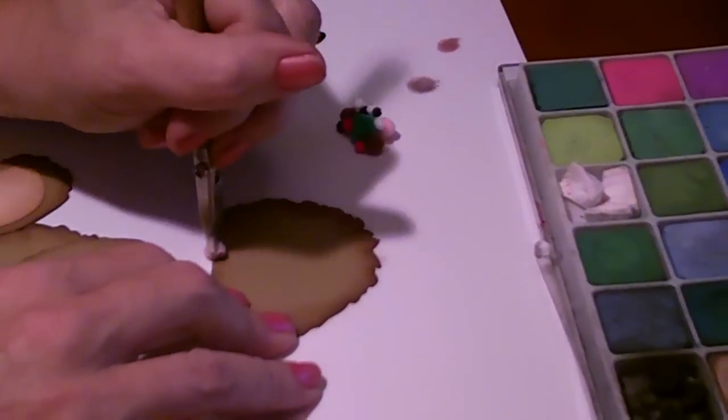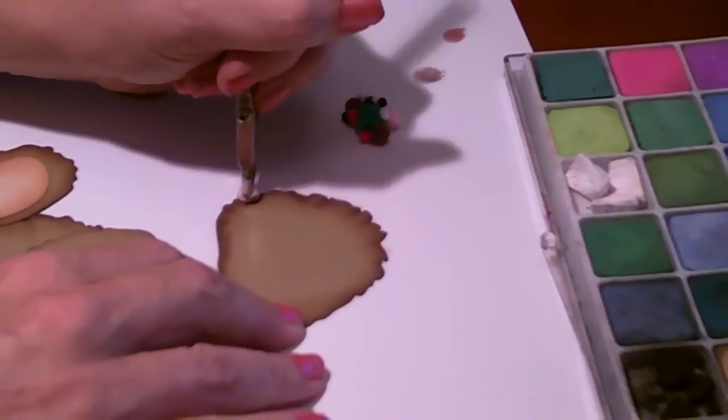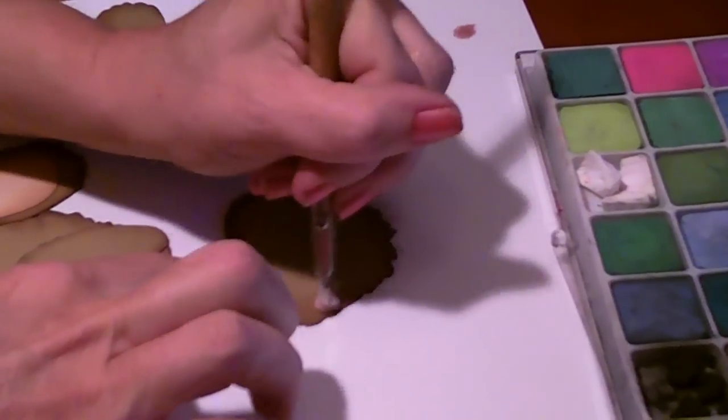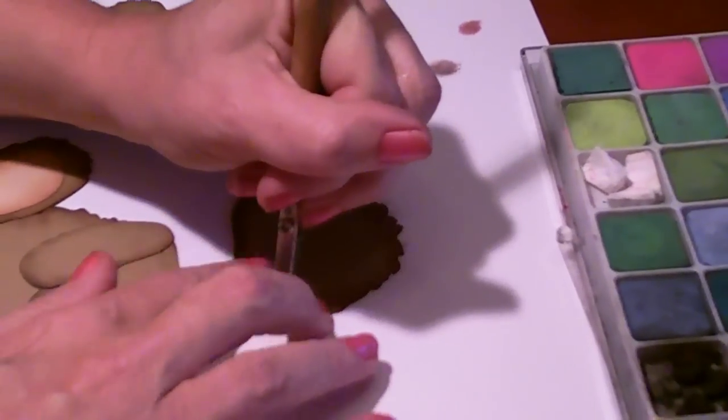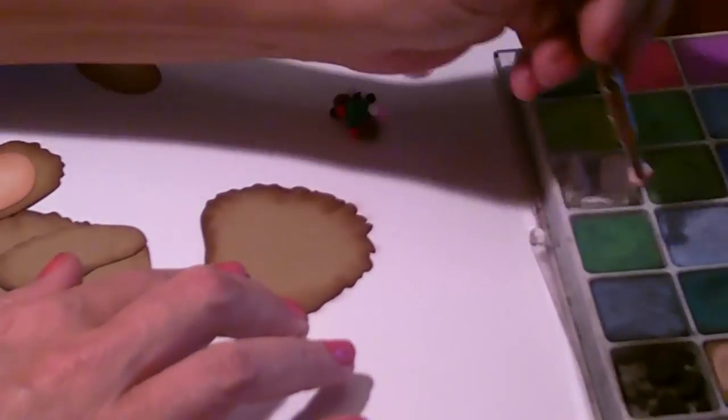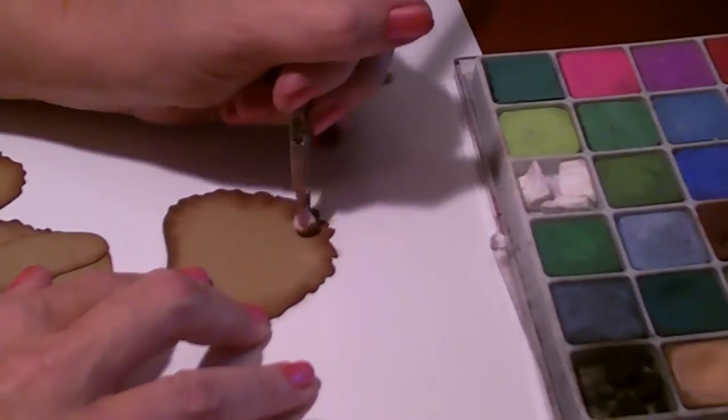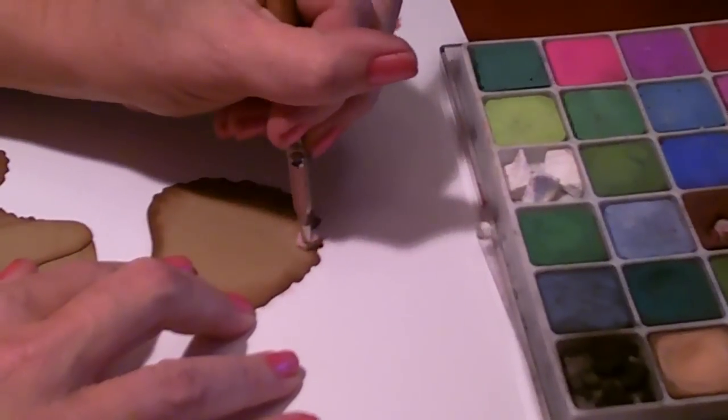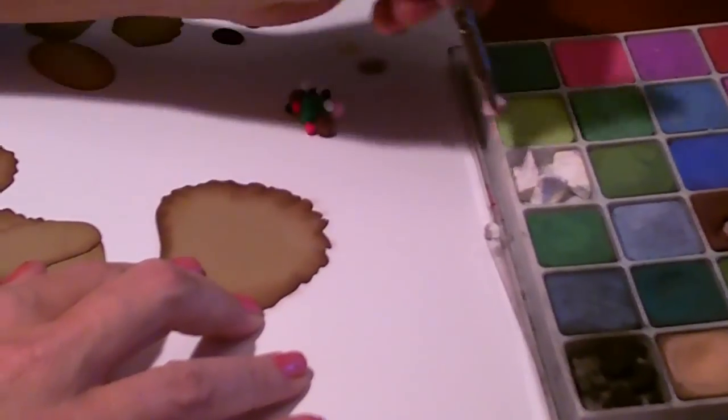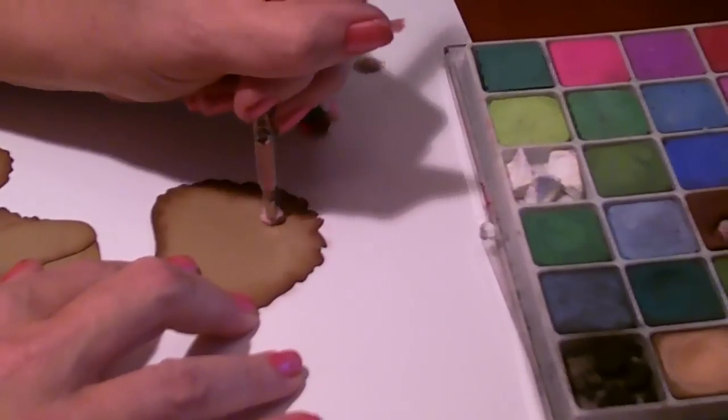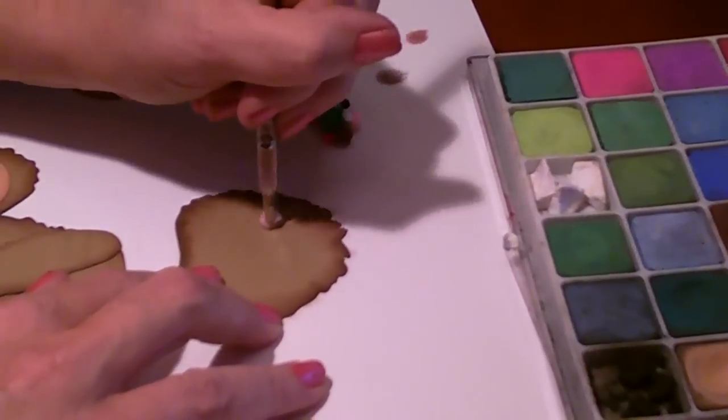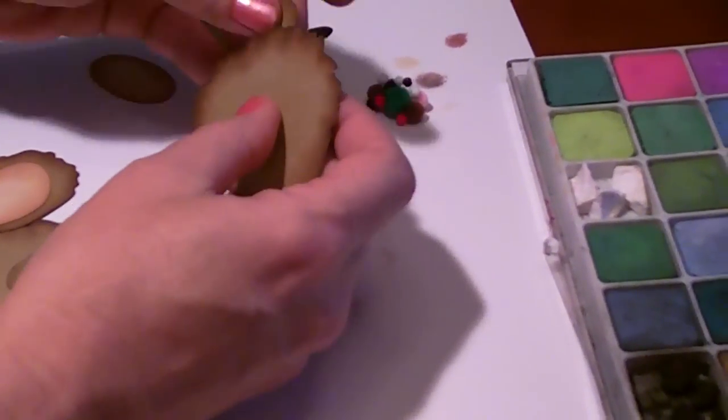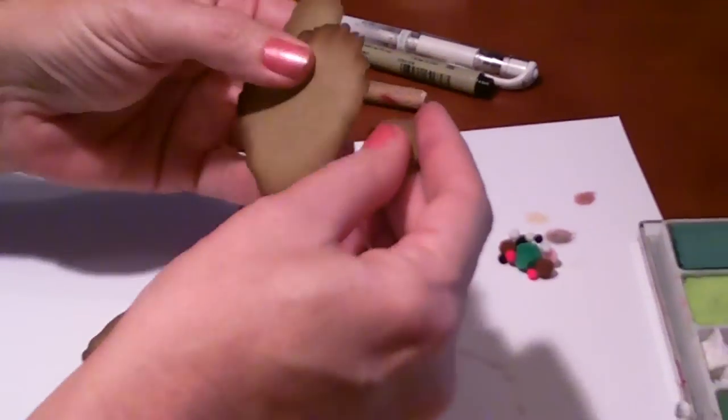I always dab off on a piece of paper after going into the chalk. Otherwise, you'll put too much chalk on it. It's best to start out light and gradually go darker. Add a little bit of lighter brown in some areas. Okay, that looks pretty good. I'm going to go ahead and attach the ears that have already been chalked.